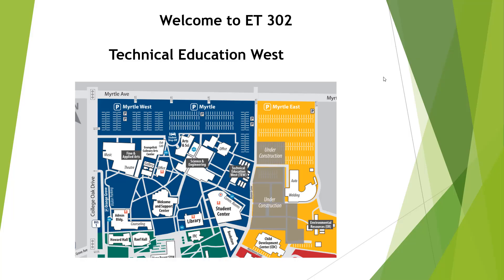Here we have a map of the north side of campus between College Oak Drive and Myrtle. We're going to be at the gate here — just look for all the tractors and construction equipment. They tore down our building. The bad news is it's going to be messy, but the good news is we're going to get a brand new lab and classrooms — very modern and quite nice. In the meantime, all of our stuff will be located in Technical Education West, TEW.